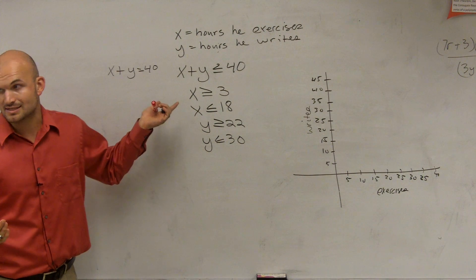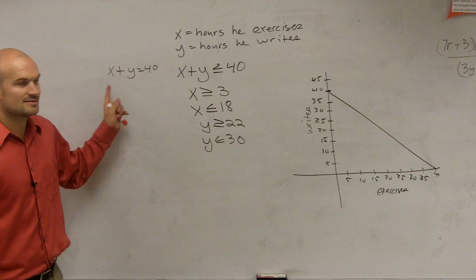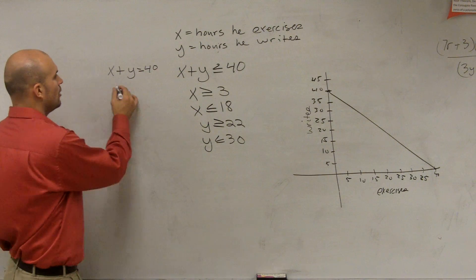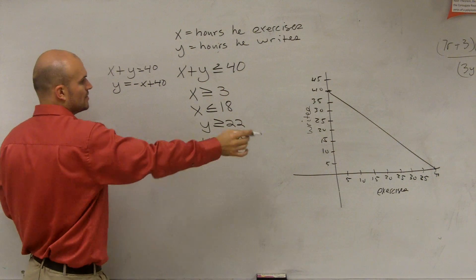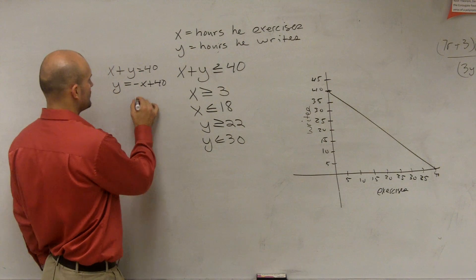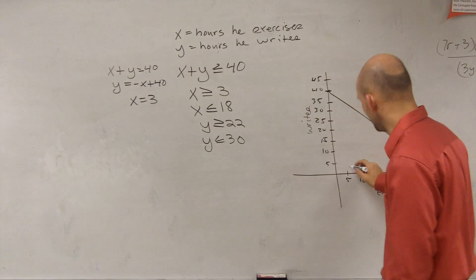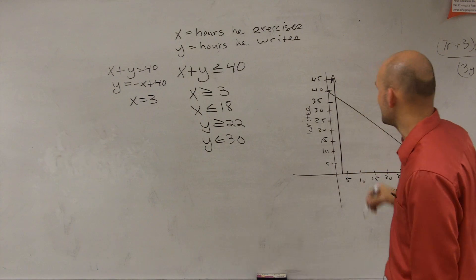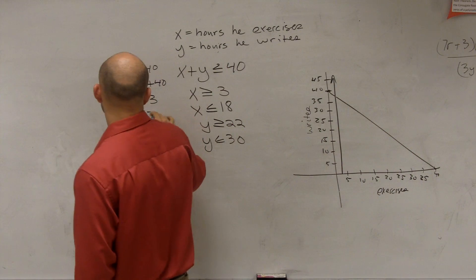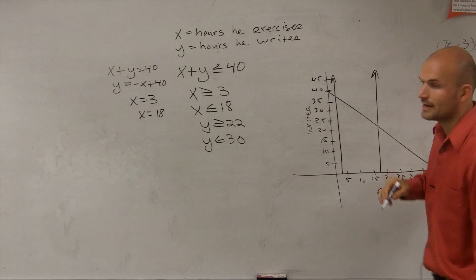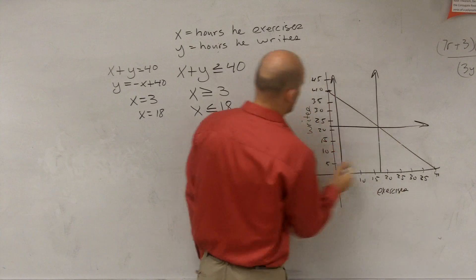To graph x plus y equals 40, find the intercepts: put 0 in for x, solve for y, put 0 in for y, solve for x — that gives you 40 and 40 — then connect. Or solve for y: y equals negative x plus 40, so the y-intercept is 40 and slope is negative one. For x equals 3, that's a vertical line at 3. For x equals 18, another vertical line at 18. And since x gives vertical lines, y equals 22 and y equals 30 will be horizontal lines.